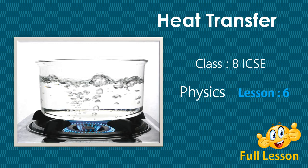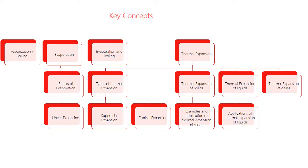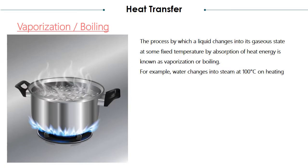In this video we are going to learn about heat transfer, the physics lesson for Class 8 ICSE. This is Chapter 6. The key concepts we are going to see in this chapter are vaporization or boiling, evaporation, and thermal expansion. In evaporation we have the subdivision effects of evaporation, and in thermal expansion we have types of thermal expansion, including thermal expansion of solids, liquids, and gases.